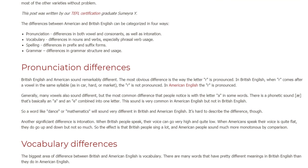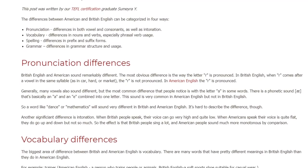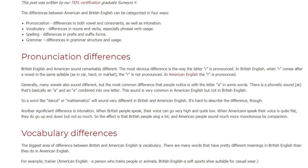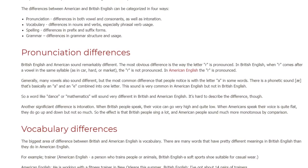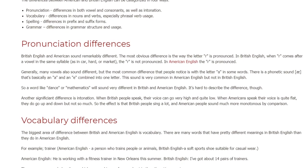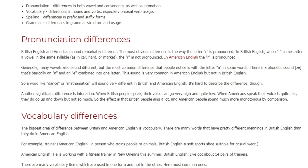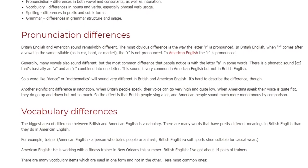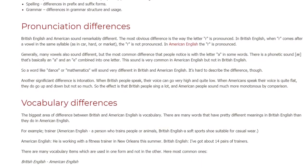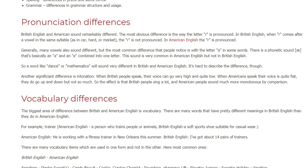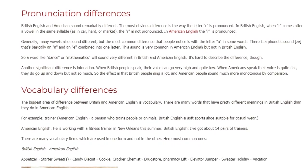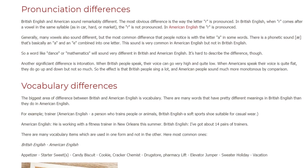The most common difference that people notice is with the letter A in some words. There is a phonetic sound called 'ash,' which is basically an A and an E combined into one letter. This sound is very common in American English but not in British English. So a word like 'dance' or 'mathematics' will sound very different in British and American English. It's hard to describe the difference, though.